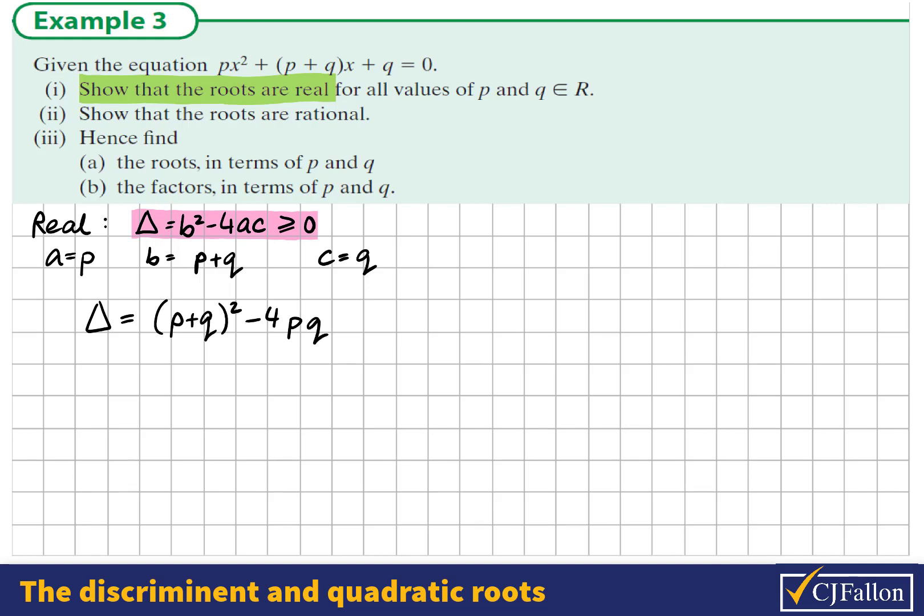We might expand the square here. So when we expand (p + q)², we square the first part, that's p², multiply the two terms and double it, so that's +2pq, and square the second term, that's q², and then we have the -4pq. We can see that we can simplify this because we have a 2pq and a -4pq, giving -2pq.